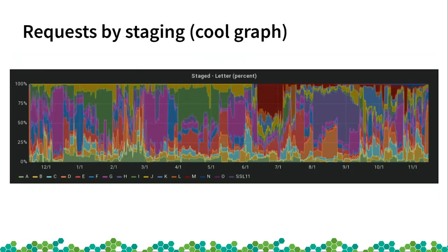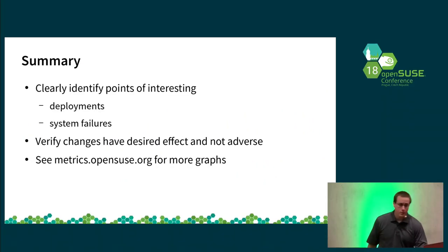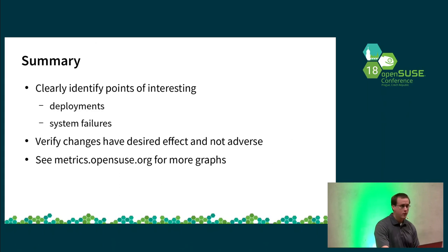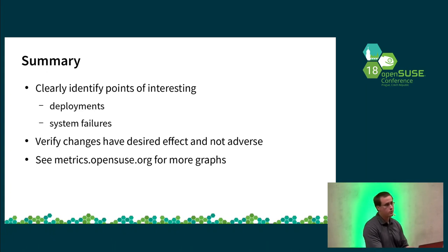This graph shows the percentage of requests staged in each letter staging. We generally have a couple big stagings and lots of little ones. By providing all these graphs, you can recognize trends that would otherwise be hidden. To summarize: we were able to see deployments very clearly — when we made changes, they had a significant effect. We could also see OBS outages and system failures. With the weekly releases, there was no major drop-off, just standard fluctuation, so we didn't have any adverse effect on the rate.